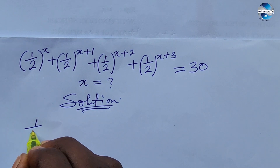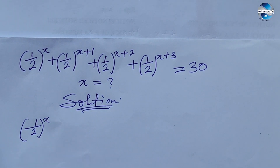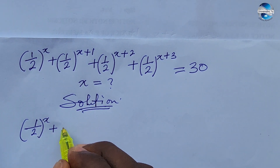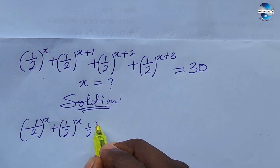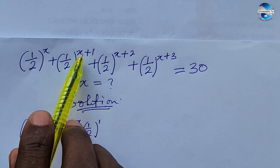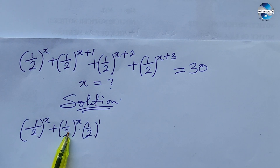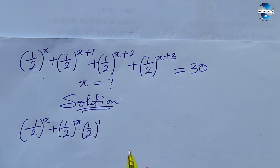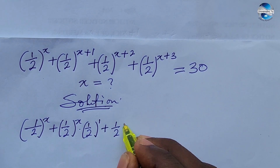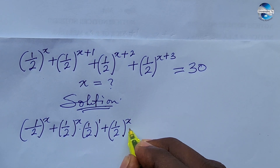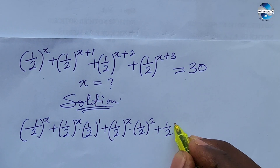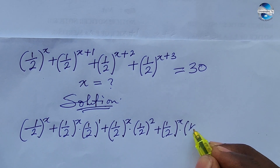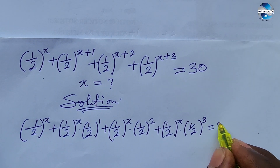This will give us (1/2)^x for the first expression. The next term becomes (1/2)^x times (1/2)^1, because the bases are the same so we add the exponents. Similarly, the third term becomes (1/2)^x times (1/2)^2, and the fourth term becomes (1/2)^x times (1/2)^3. This is all equal to 30.